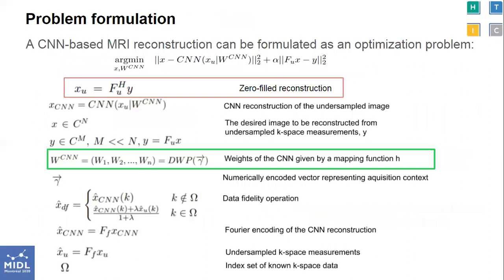In the problem formulation, a CNN-based MR reconstruction can be formulated as an optimization problem. The first term enforces the desired image X to be well-approximated by a CNN reconstruction, where X_CNN equals CNN of X_u parameterized by W_CNN, and W_CNN is the network weight. The second term enforces data fidelity in K-space to ensure consistency with the acquired K-space measurements. The acquisition context is mapped to the CNN weights by a dynamic weight prediction function, highlighted in green, which in our case is a neural network that learns this mapping.